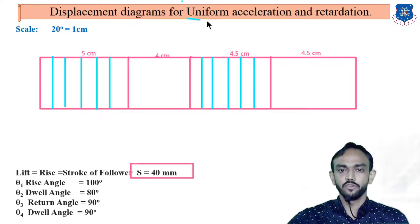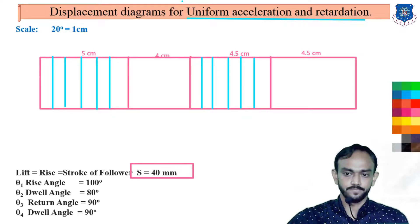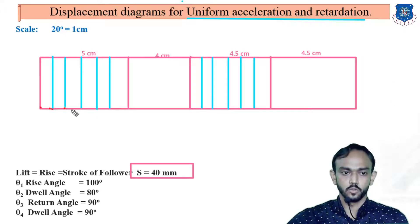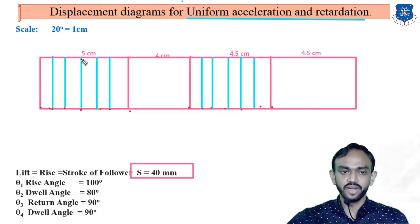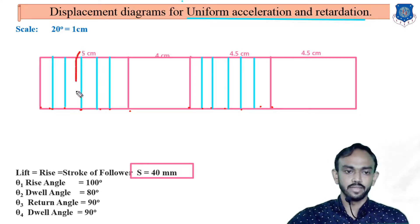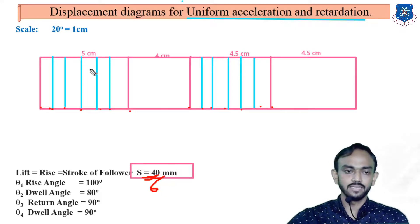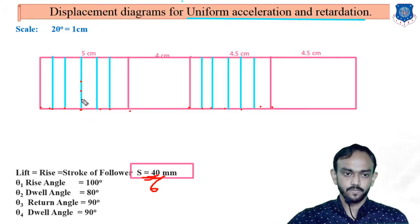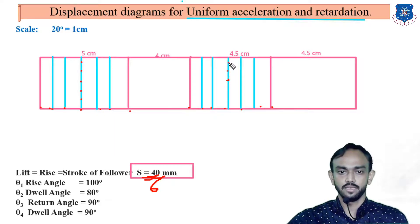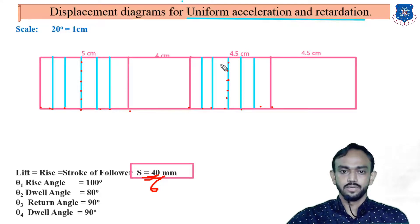For the uniform acceleration diagram, you give notations to the points: 0, 1, 2, 3, 4, 5, 6 for rise, and 0 dash through 6 dash for return. After that, you divide the center line — meaning 40 divided by 6, whatever you get, divide this vertical center line into 6 equal parts. I am dividing this center line into 6 parts by measuring with a scale, for both rise and return sections.